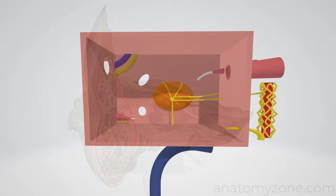We've now switched to a 3D schematic to conceptualise the boundaries and structures passing through the walls of the middle ear. The middle ear has anterior, posterior, medial and lateral walls, as well as a roof and a floor.